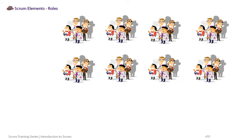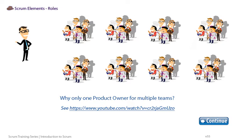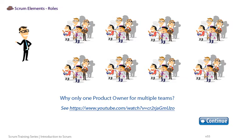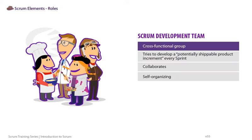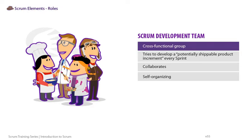In large-scale Scrum, there's only one Product Owner for multiple development teams. The Scrum Development Team is a cross-functional group responsible for self-organizing to develop a shippable product every sprint. This is hard to do in the beginning, but today more and more teams are learning how to do it. You don't want to be the last team that learns how to do this.